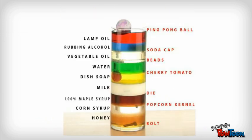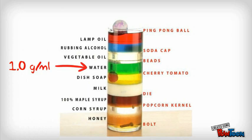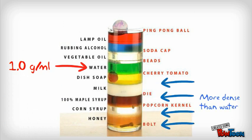An object's density determines if it will sink or float. Liquid water has a density of 1 gram per milliliter. If an object has a density higher than 1 gram per milliliter, it will sink. If the density is less than 1 gram per milliliter, it will float.